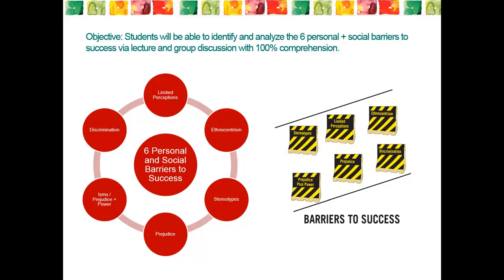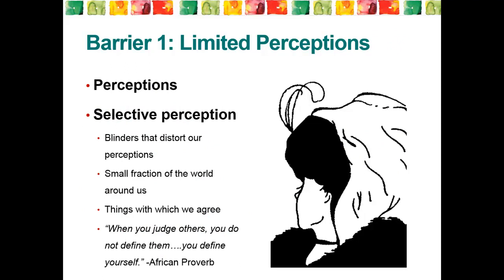Among social barriers are the perceptions, thoughts, and actions of others. Ethnocentrism, stereotypes, prejudice, and discrimination are barriers that can be personal and/or social depending on the situation. Let's move on to the first barrier. Barrier number one, Richard Butcher defines as perceptions.